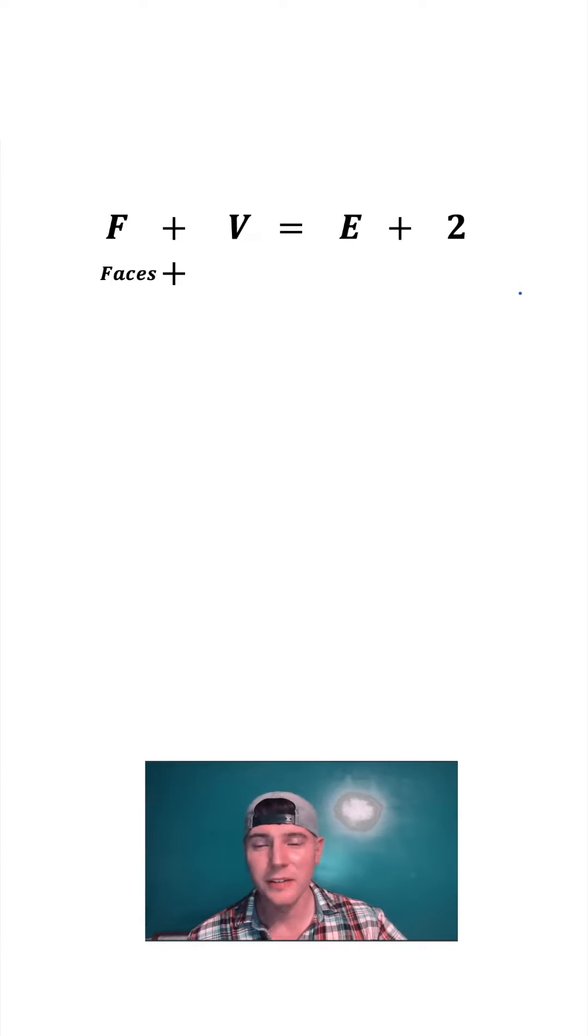F stands for faces, V stands for vertices, E stands for edges, and two is just two. What does this mean?